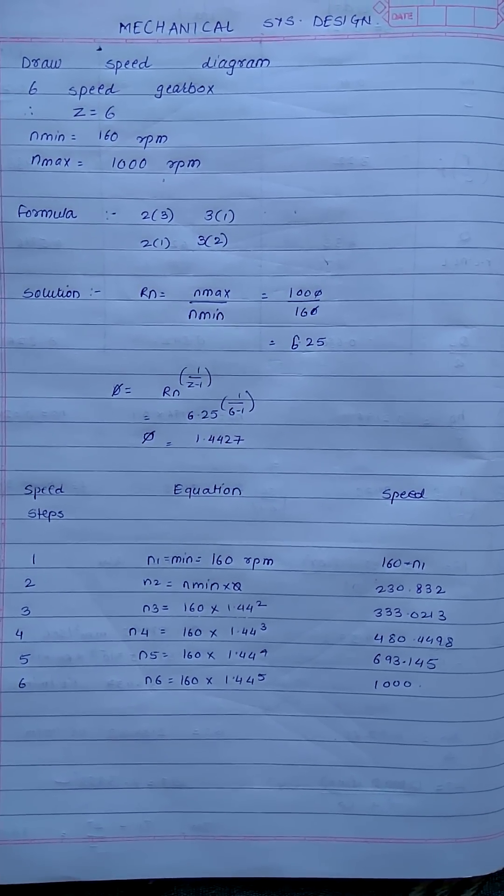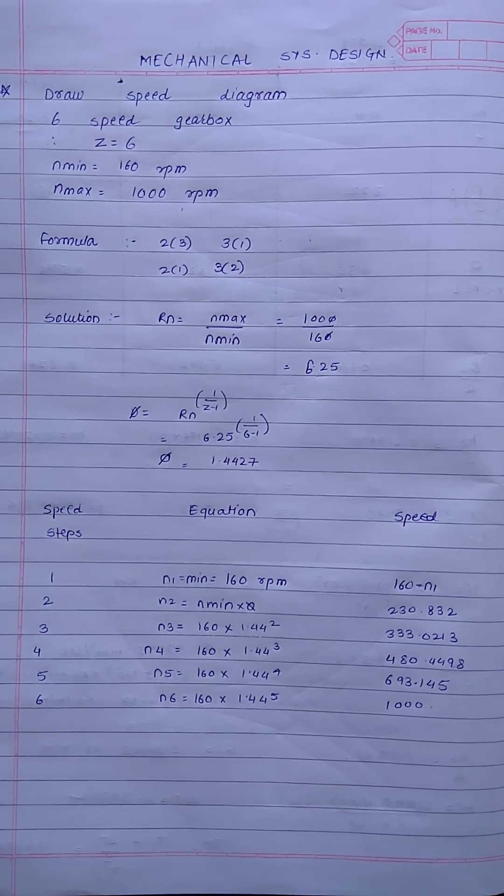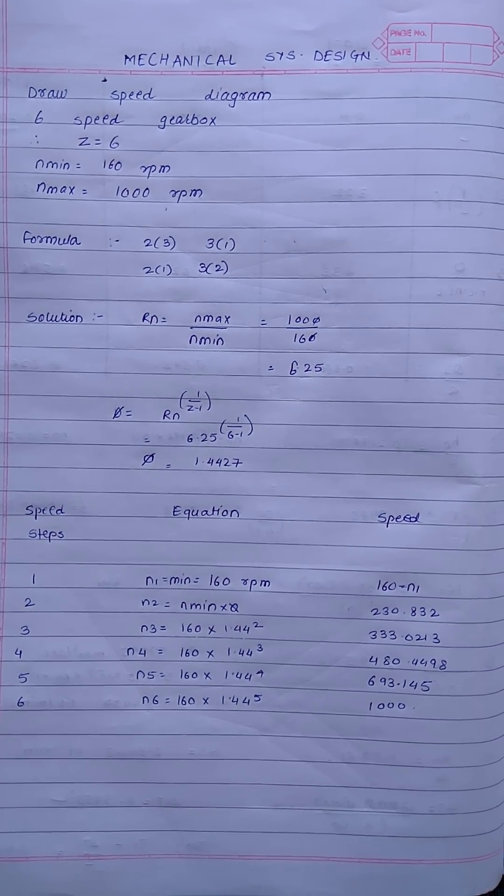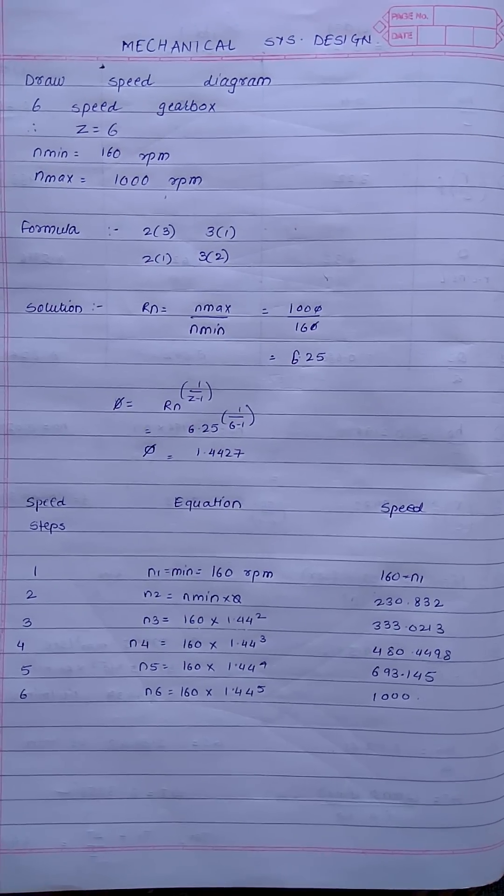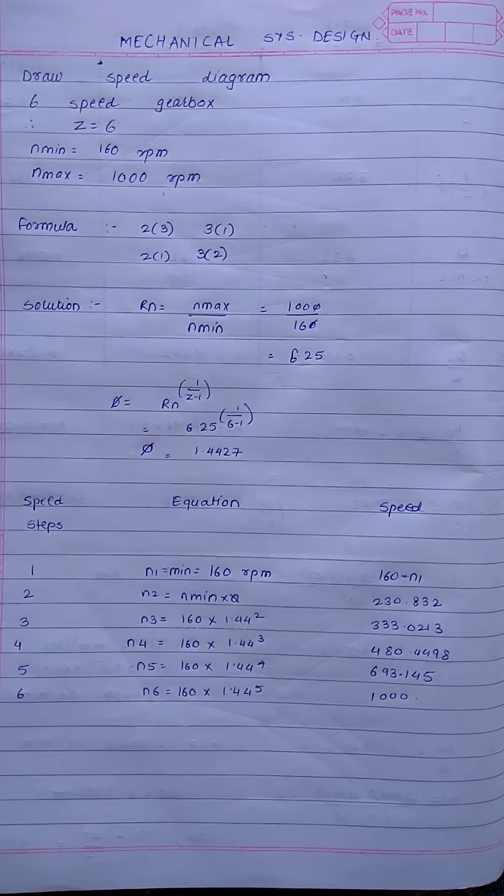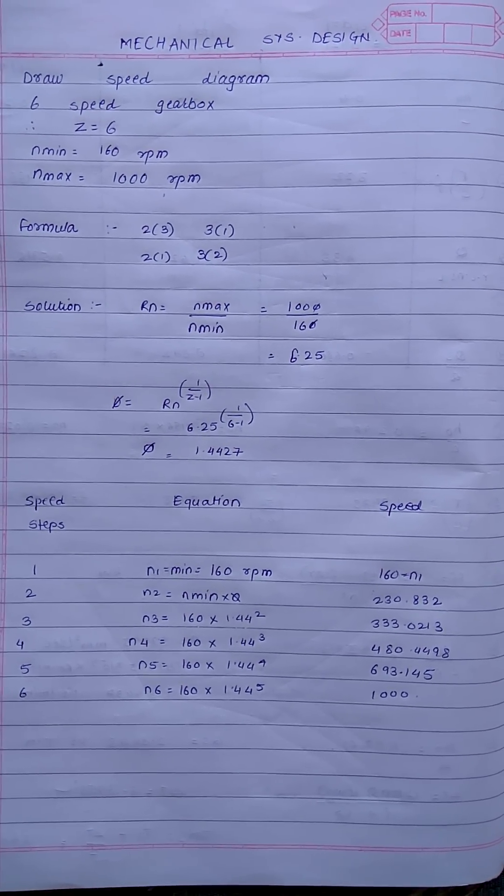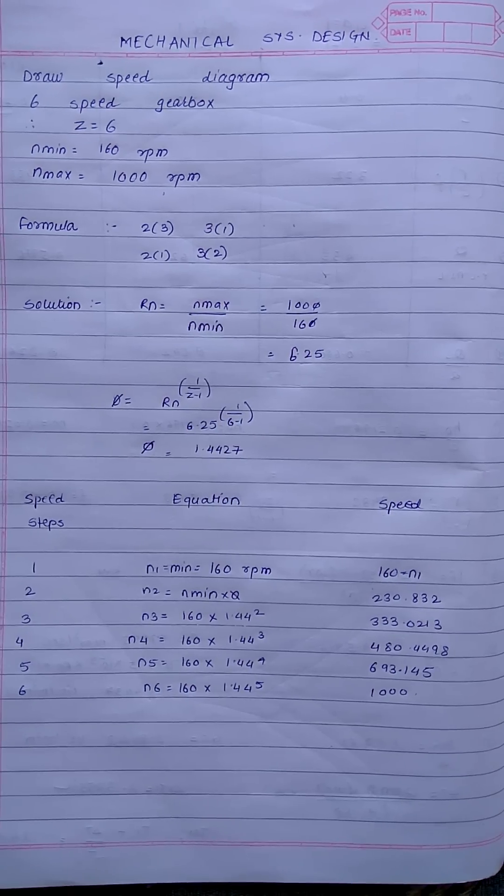Now calculating phi, phi is the progression ratio which is equal to rn raised to 1 upon z minus 1. z is 6 because we have been given a 6-speed gearbox. rn value is 6.25. We find out phi is equal to 1.4427.